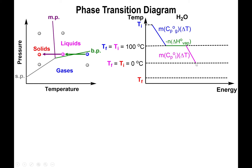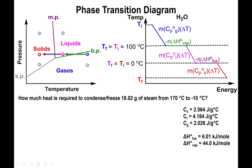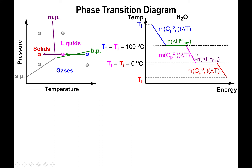We then touch the melting point. Since T_final is below the melting point, we must cross this plateau and go horizontal again. At the melting point we use the enthalpy of fusion, and again we multiply by negative one times the number of moles of the substance, because we are cooling down and freezing rather than melting.